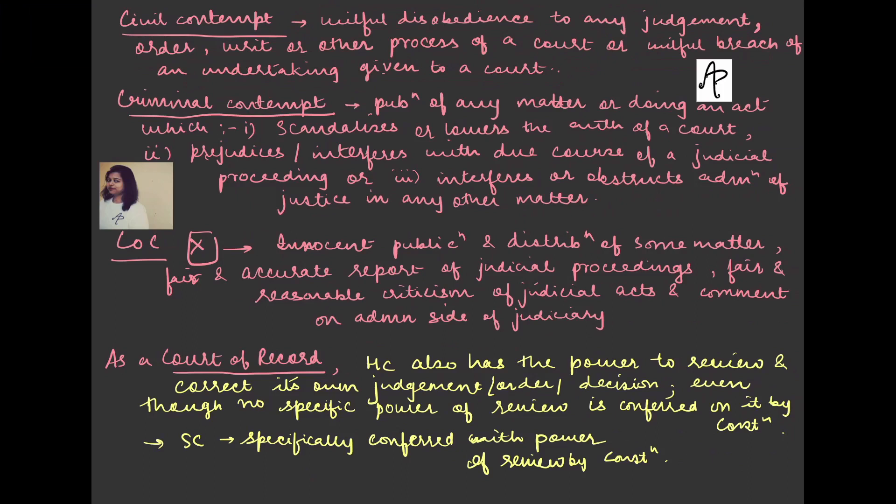What is criminal contempt? It is about the publication of any matter, or doing an act, which scandalizes or lowers the authority of a court. Or interfering with the due course of a judicial proceeding, or obstructing or interfering with the administration of justice in any other matter.